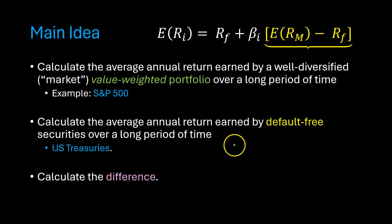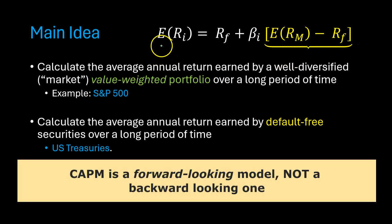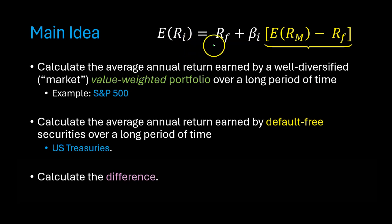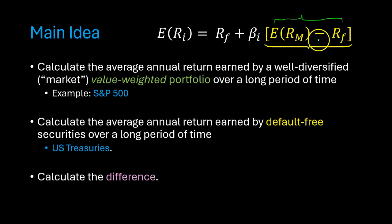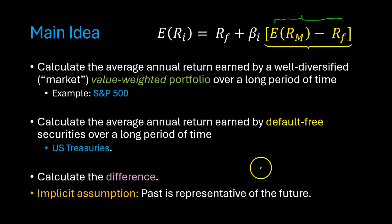Please understand, and this is a very important point, once we have an average using historical data, we are using that average to come up with an estimate of what this premium might look like going forward. Capital asset pricing model is a forward-looking model. We're trying to understand the rate of return that investors should expect going forward, and we are coming up with an estimate of what the market risk premium might look like going forward based on what it has looked like in the past. So the implicit assumption is that the past is representative of the future.